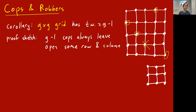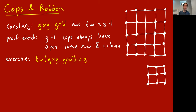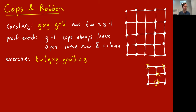In fact the tree width of a G-by-G grid is exactly G — as an exercise, prove that even G cops cannot win in a G-by-G grid. For the three-by-three grid, even three cops cannot win: if there's a cop here, here, and here, and the robber is at the center, when one cop flies up to land on the center the robber sees it coming and can run to a variety of places. A slightly more sophisticated robber strategy makes this work — I leave that as an exercise.